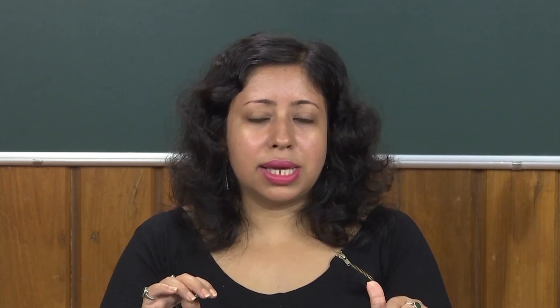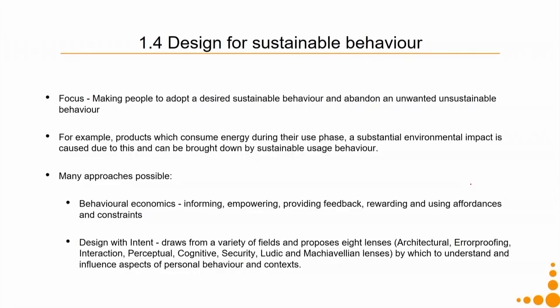Bringing in affordances and constraints allows people to adopt sustainable behaviour in context. For example, if someone segregates organic and dry waste at home but the municipality has no system to collect them separately, the sustainable behaviour is pointless — the person is not empowered. Similarly, not living on the ground floor or lacking space for a composting unit creates a constraint even when a person wants to compost organic waste.